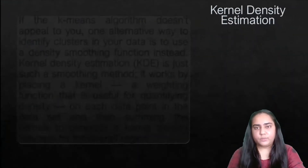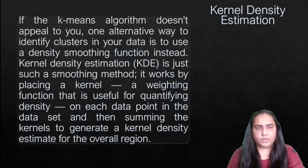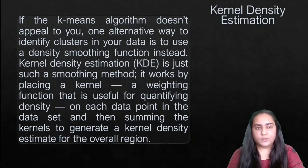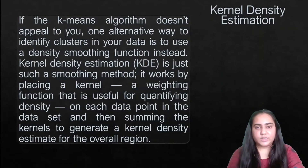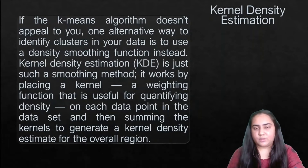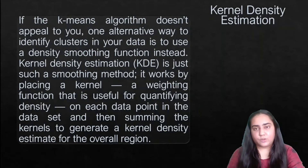The first algorithm is kernel density estimation. If the K-means algorithm doesn't appeal to you, one alternative way to identify clusters in your data is to use a density smoothing function instead. Kernel density estimation, also called KDE, is just such a smoothing method. It works by placing a kernel — a weighting function useful for quantifying density — on each data point, and then summing the kernels to generate a kernel density estimate for the overall region.